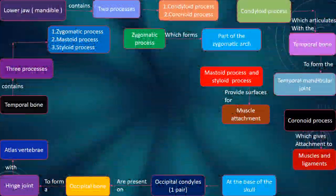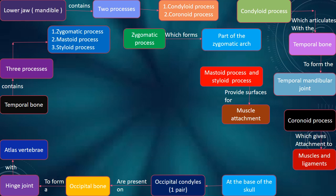The lower jaw (mandible) contains two processes: condyloid process and coronoid process. The condyloid process articulates with the temporal bone to form the temporomandibular joint. The coronoid process gives attachment to muscles and ligaments.